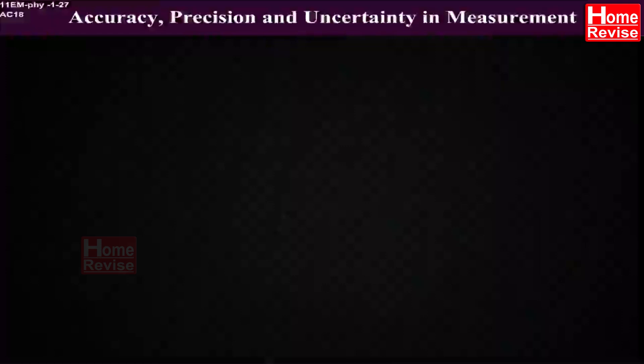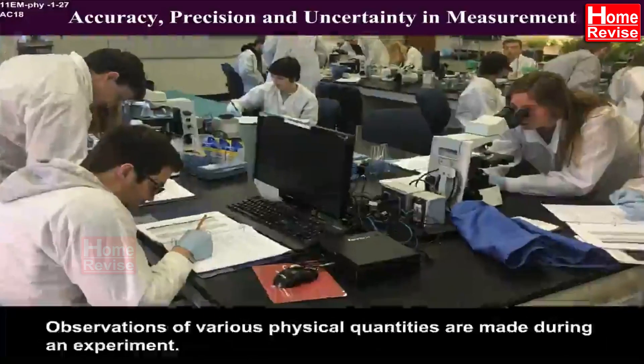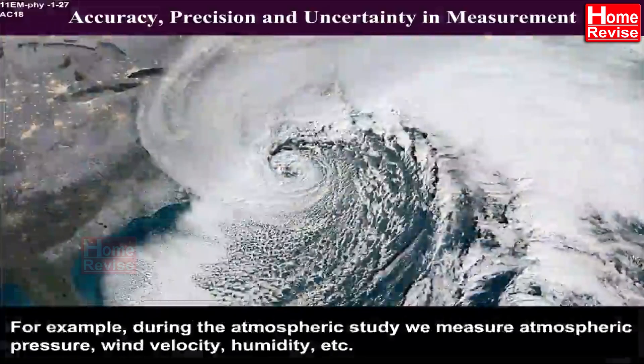Accuracy, precision and uncertainty in measurement. Physics is a science based on observations and experiments. Observations of various physical quantities are made during an experiment. For example, during the atmospheric study,